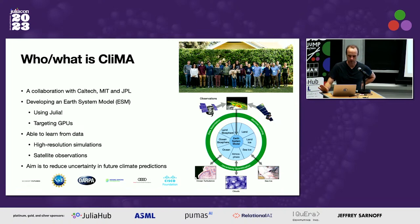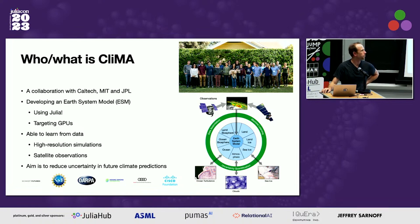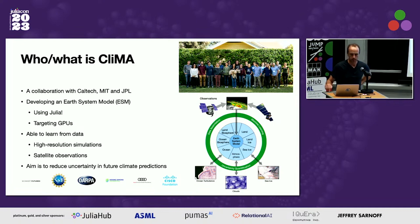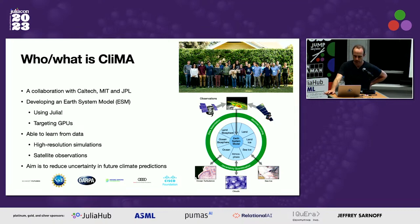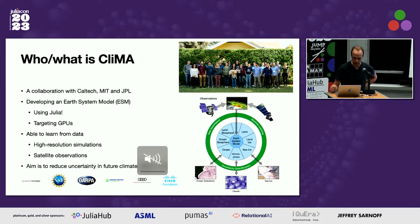So who and what is Klima? It's a collaboration between Caltech, MIT, and JPL. We're developing an Earth system model in Julia, primarily targeting modern HPC hardware, namely GPUs. The primary aim is we want to be able to learn from data — either generated high-resolution simulations or systematically collected satellite observations. The fundamental aim of the project is to reduce uncertainty in future climate model predictions.